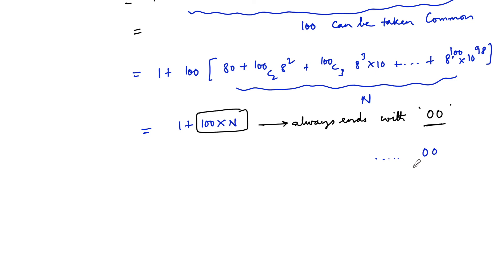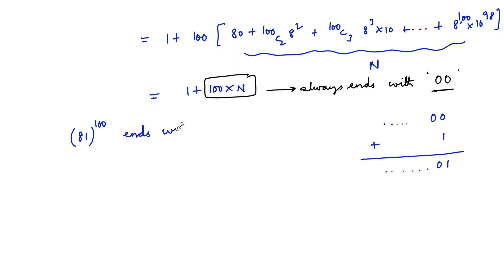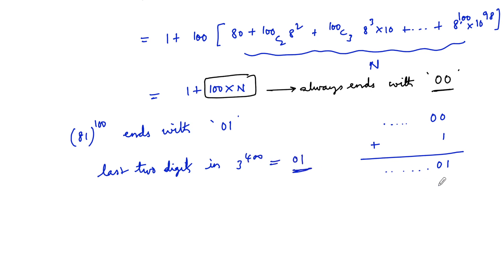Since 100n always ends with 2 zeros, the number 1 + 100n ends with those 2 zeros added to 1. So the end digits are 0 and 1. Therefore, 81^100, which equals (1 + 80)^100, ends with 01. Hence, the last two digits of 3^400 are 0 and 1, i.e., 01.